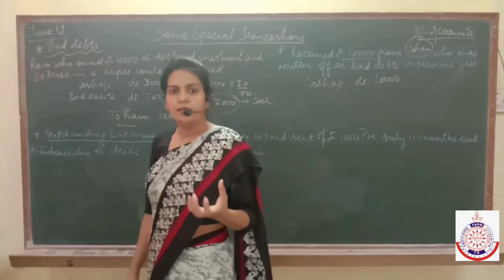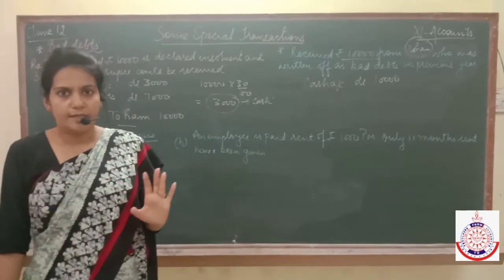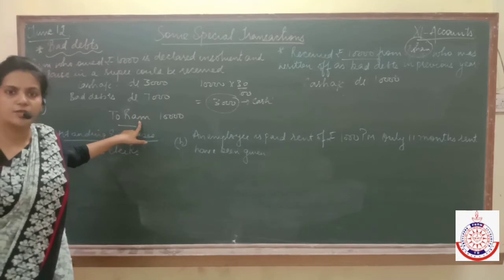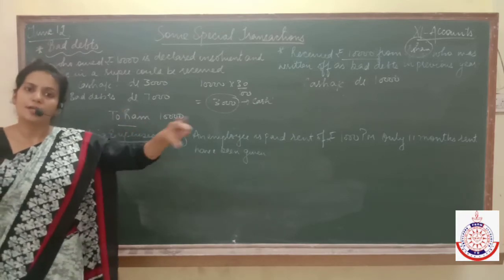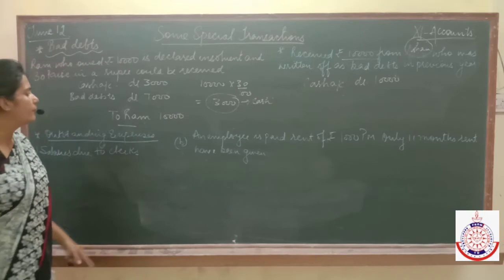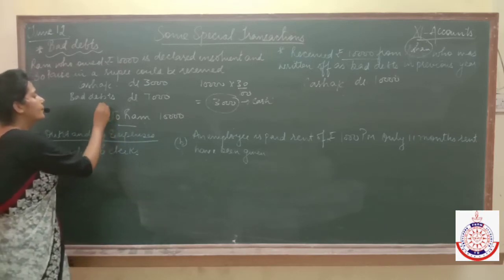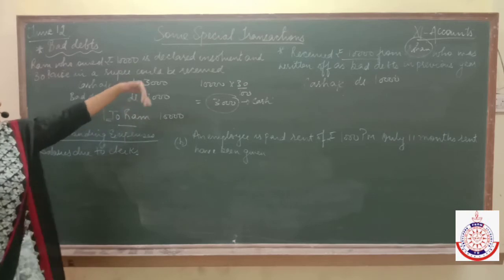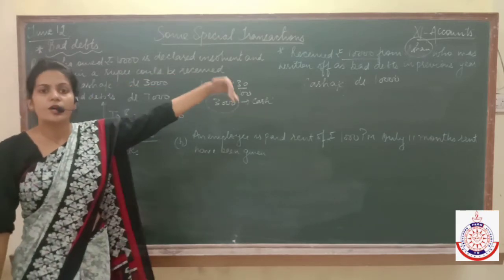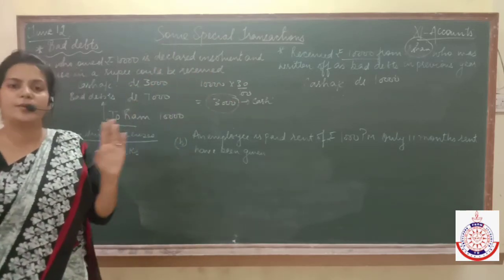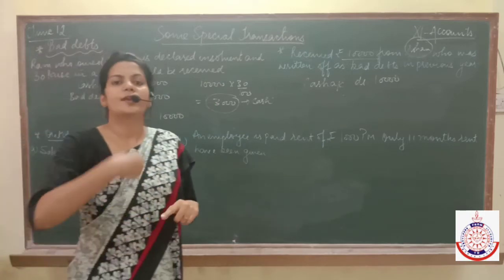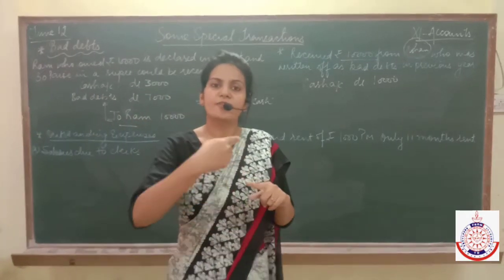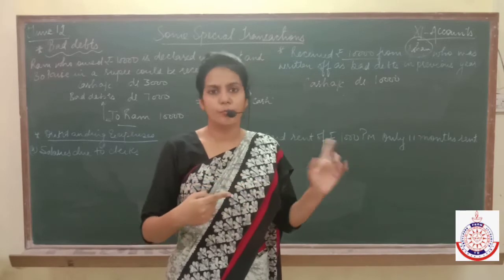Ram was our debtor — he was having a debit balance. But in that entry we credited his account, so now there is no Ram in our books. Similarly, Rohan was having a debit balance in our books. Rohan became bad debts, so we must have credited Rohan's account last year. Now Rohan's balance is zero.